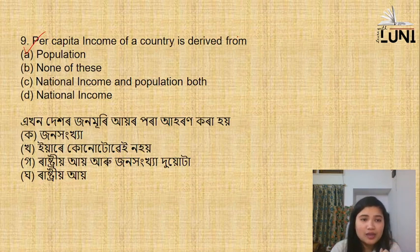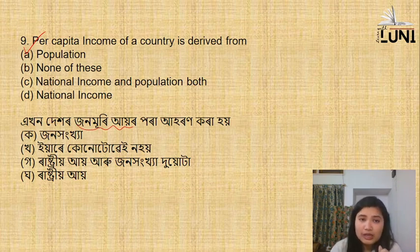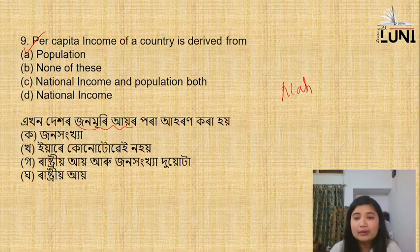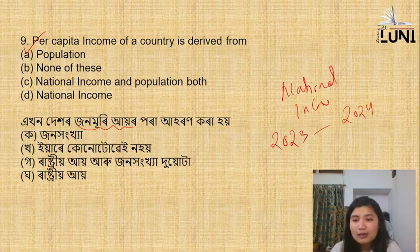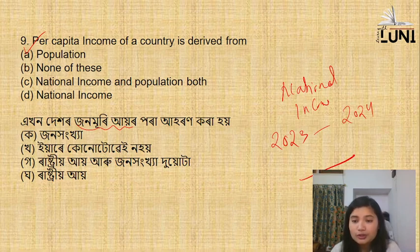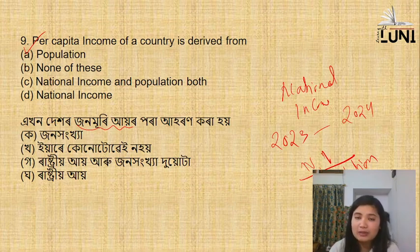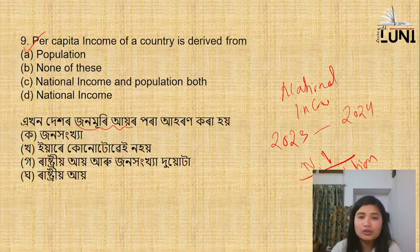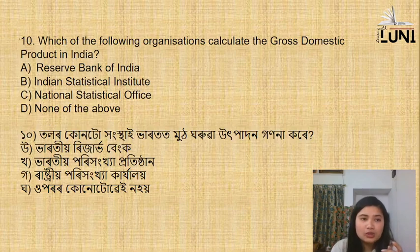Per capita income of a country is derived from: population alone; none of these; national income and population both; national income alone. Per capita income is very important. The formula is: suppose a country has a national income - you take the national income and divide it by the population. That gives you per capita income. So the answer is national income divided by population.